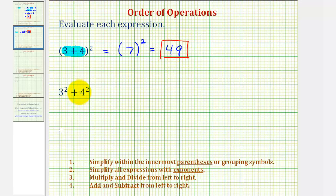Now looking at the second expression, we don't have parentheses, so step two in the order of operations is to simplify all expressions with exponents. So our first step in this expression is to simplify three squared and then four squared.